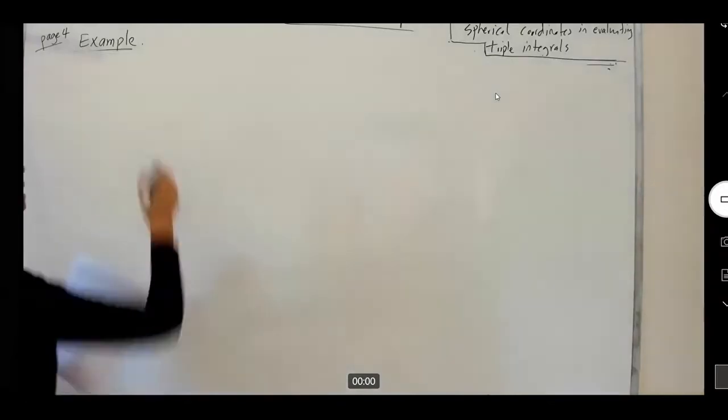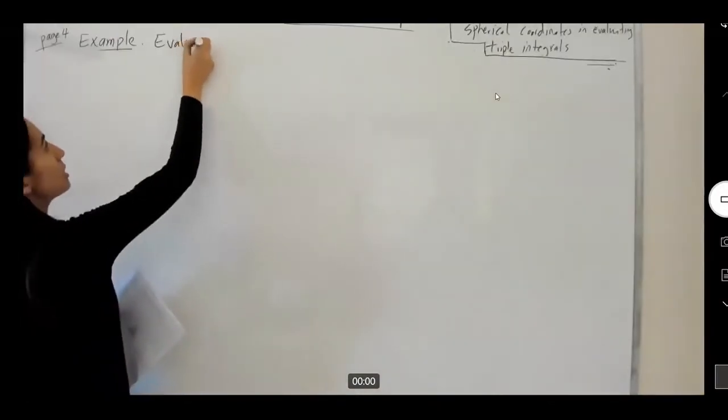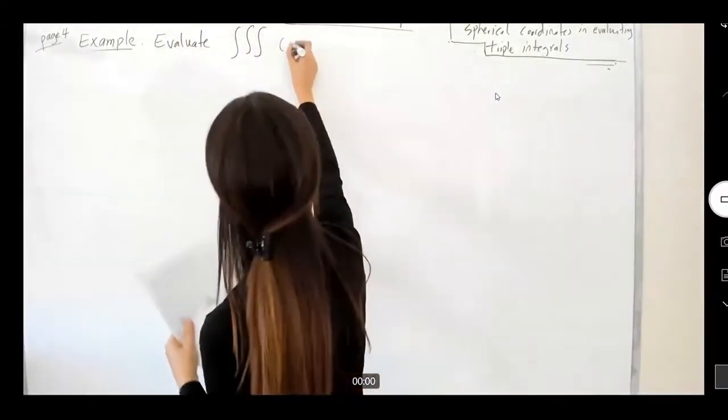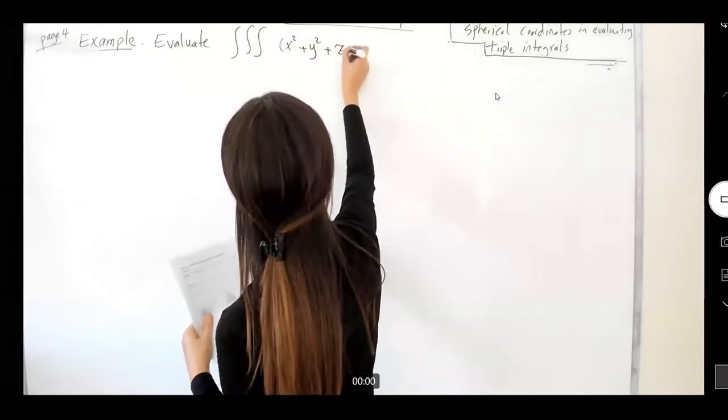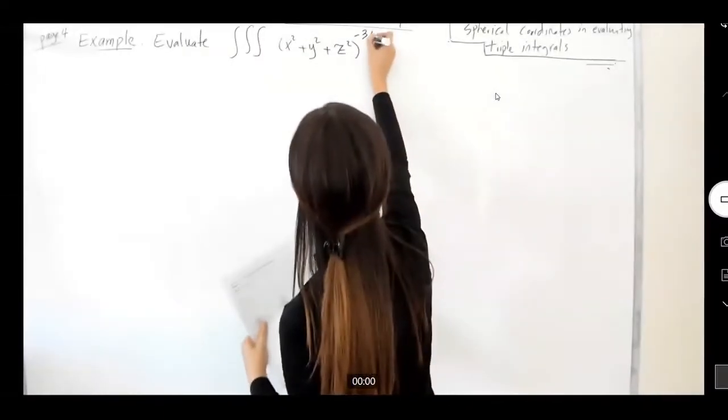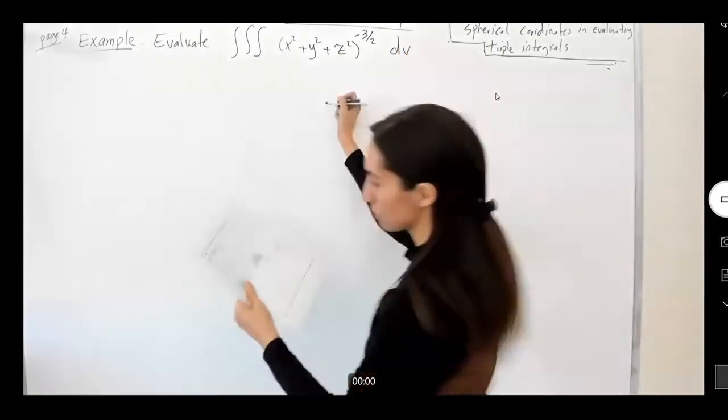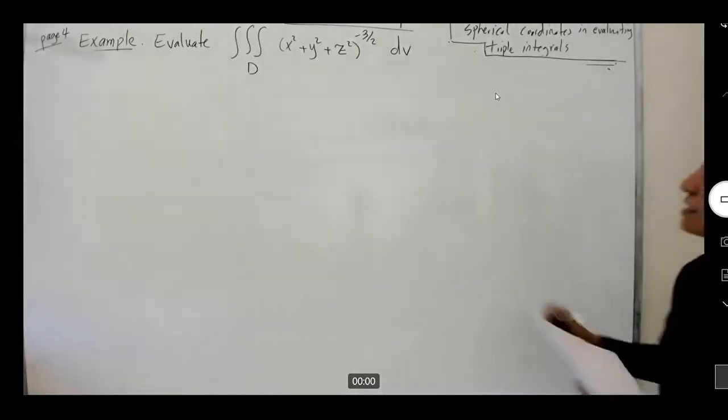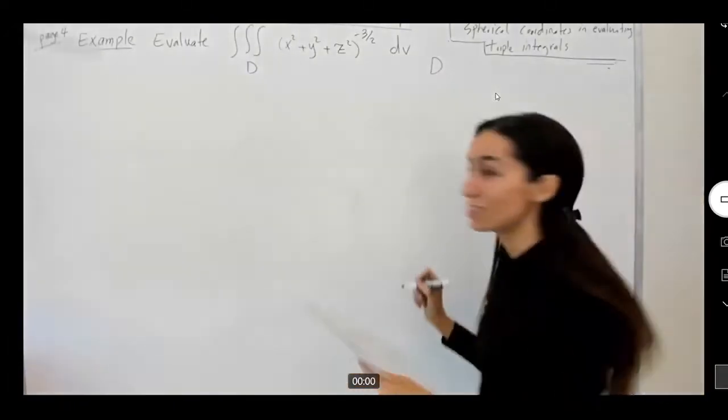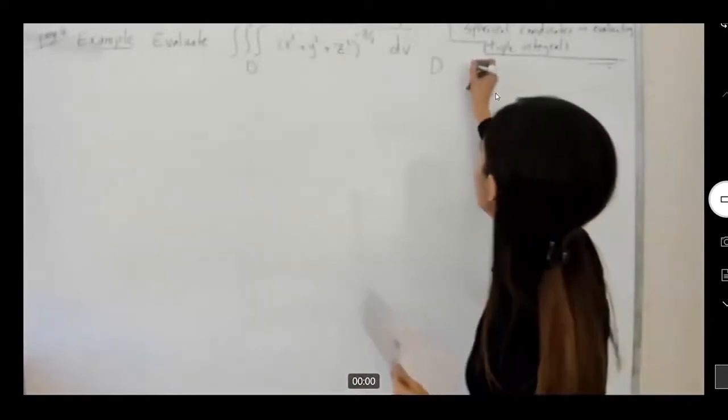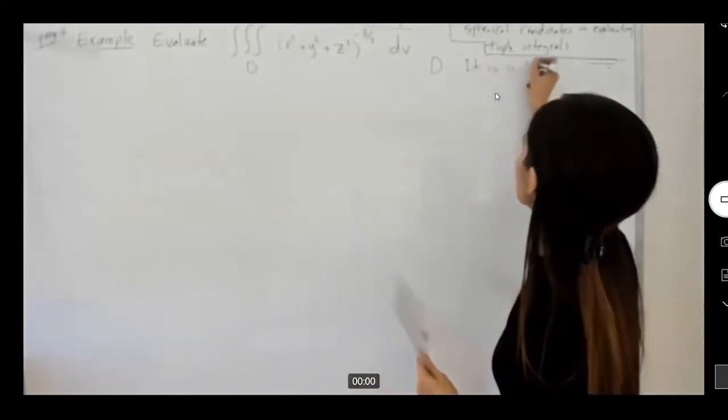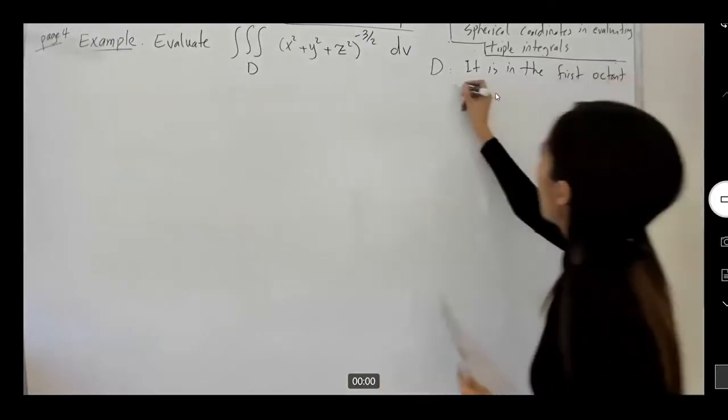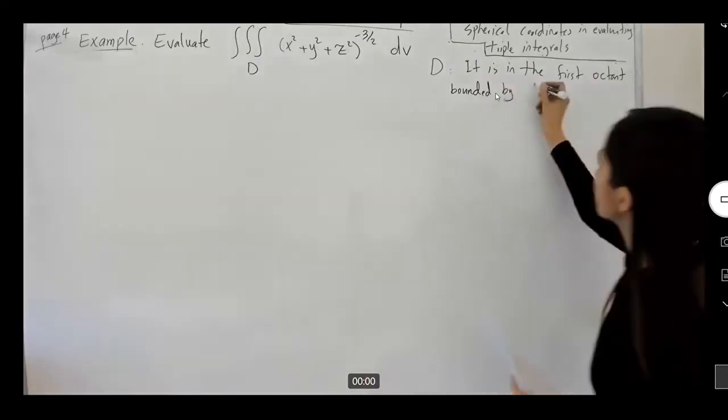Perhaps, the question says, evaluate the triple integral of x squared plus y squared plus z squared raised to negative three halves. We have dV over region D, where it says D, first of all, it's located in the first octant, it is in the first octant bounded by two.